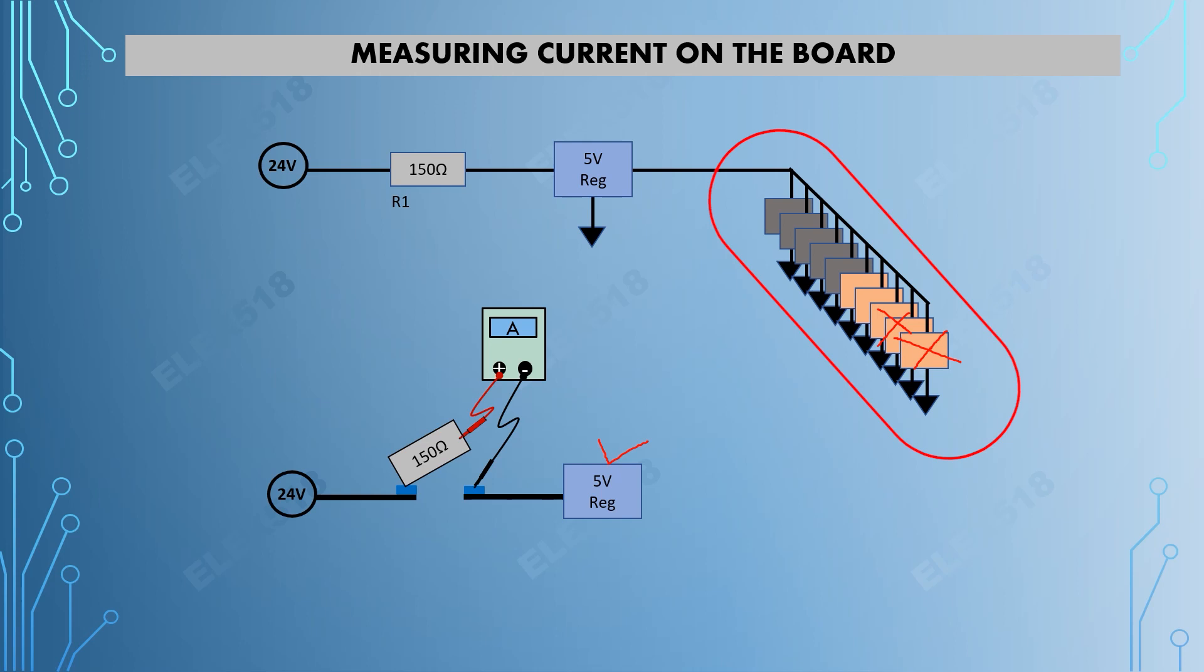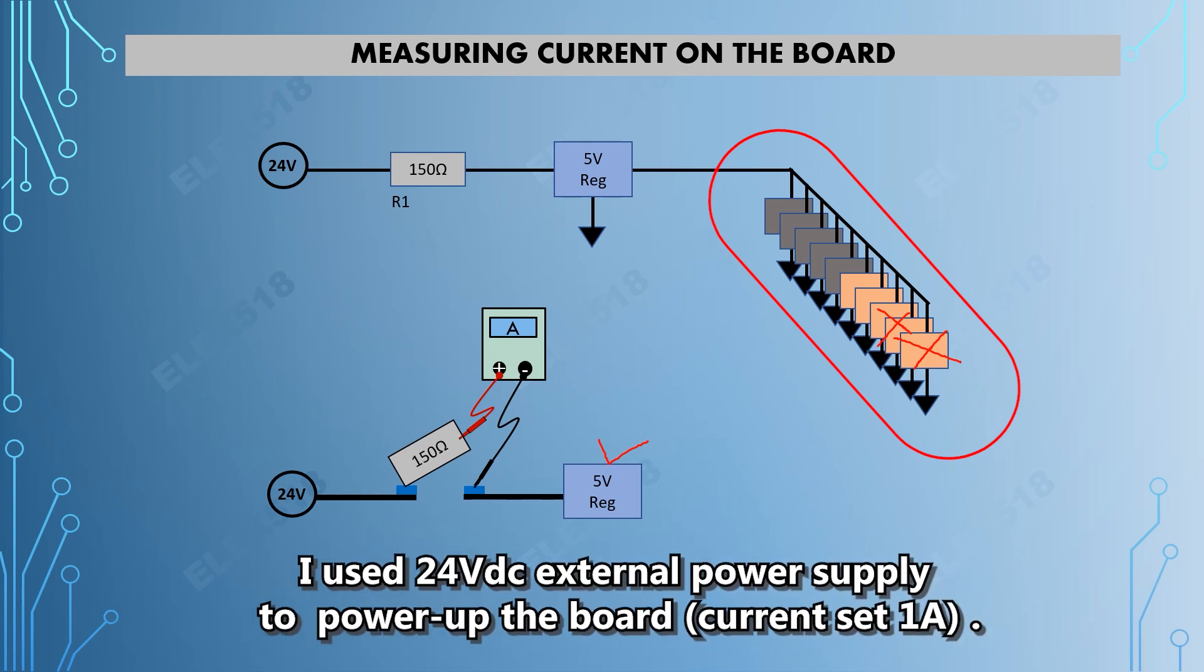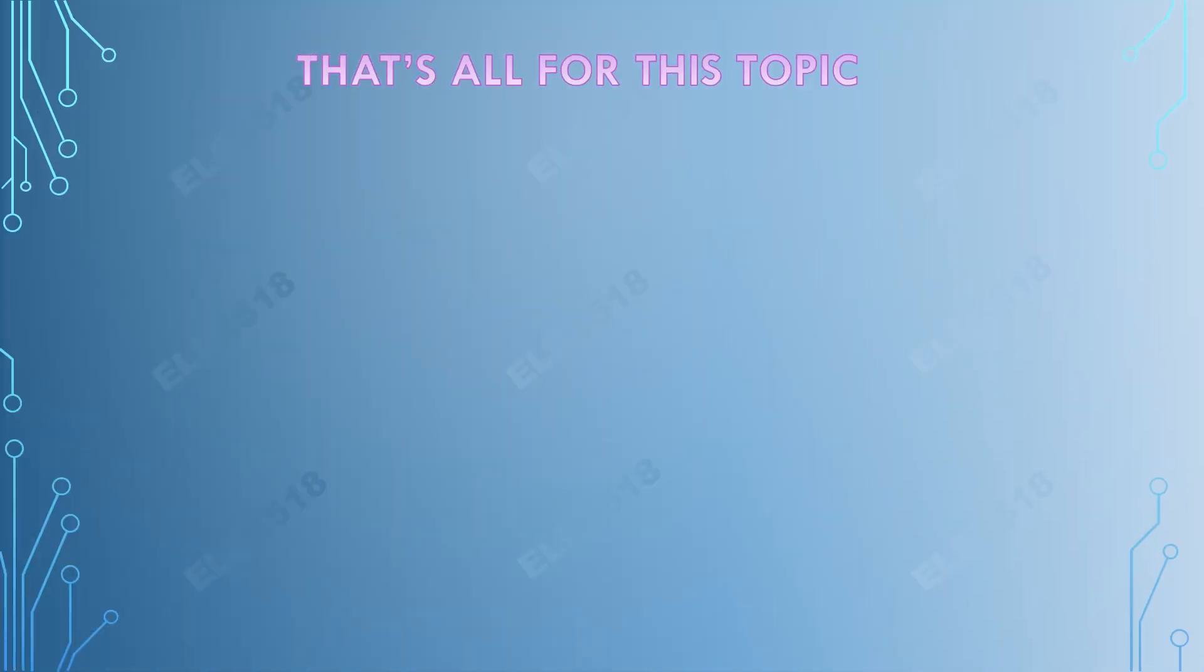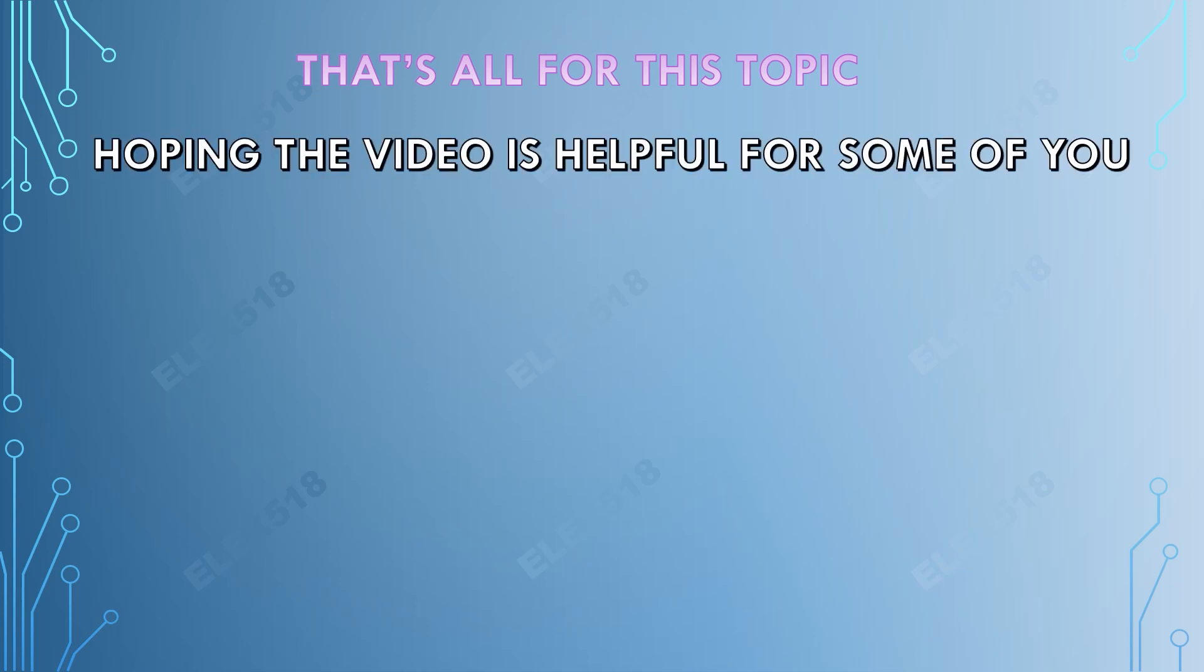Therefore, I highly suspected that one of the ICs was causing the high current drawn from the 24 volts line. To power up the board, I will just use an external 24 volts power supply.